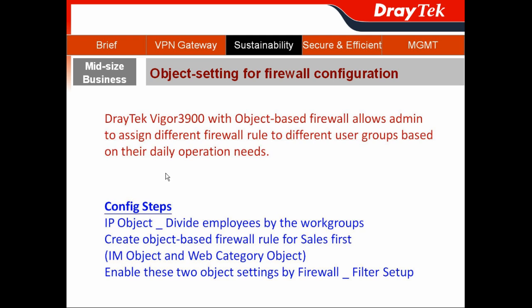The configuration steps are: first, go to create the different IP objects in order to divide employees by their work group. Then create the object-based firewall rules. In our case, we will do this for the salespeople first, including an IM object and web category object to define their daily operation.